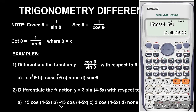The answer to this question is option B. So guys, this is how you can solve trigonometry differentiation with a Casio calculator. It's as simple as that — just follow the steps shown in this video and you'll be able to get the correct answer in any trigonometry differentiation multiple-choice question.